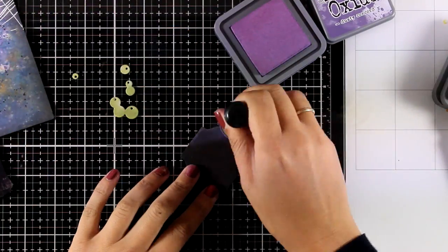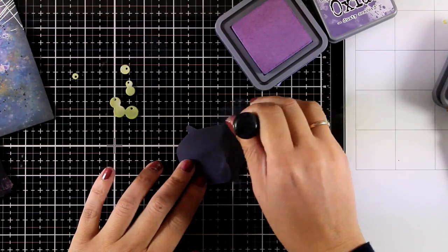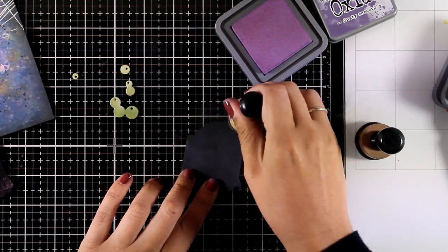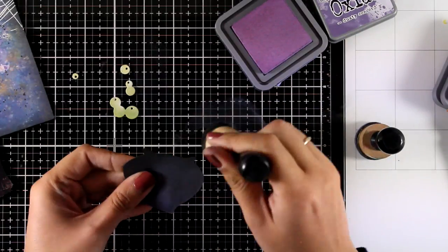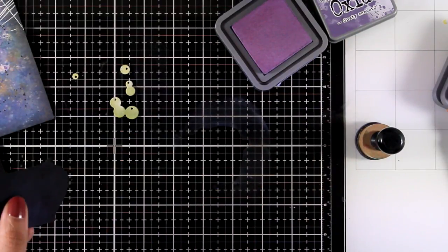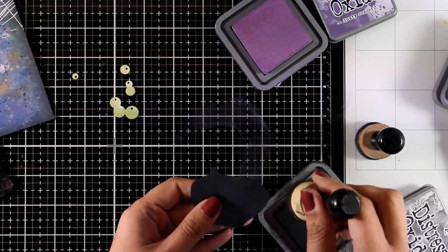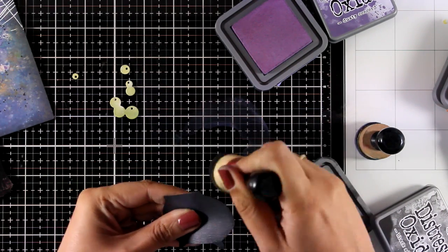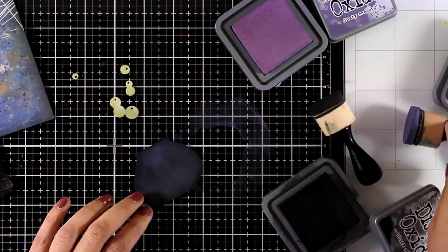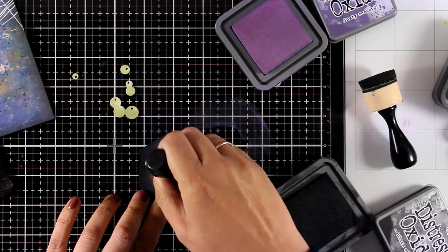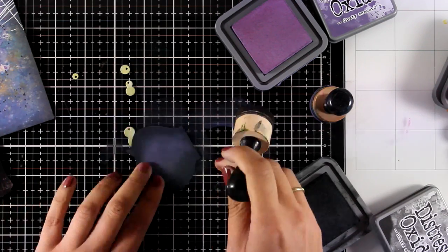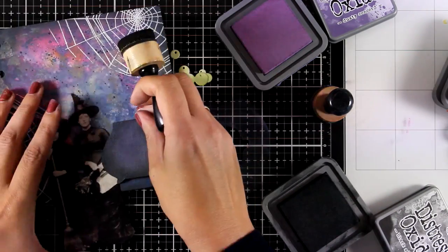I cut out and colored my bubbles with Shabby Shutters. And now I'm coloring my cauldron with Dusty Concord just to add some highlight at the center. And at the outside at the edges I'm going to add Black Soot. As you can see I'm not introducing any new colors on the elements that I'm going to add on top. Because I don't want to turn it into looking super busy. So I'm using the colors that I had already on my table from the background.